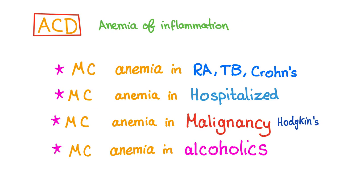Let's get some facts about anemia of chronic disease. It's the most common anemia in rheumatoid arthritis, tuberculosis, Crohn's disease. You can say chronic inflammation.